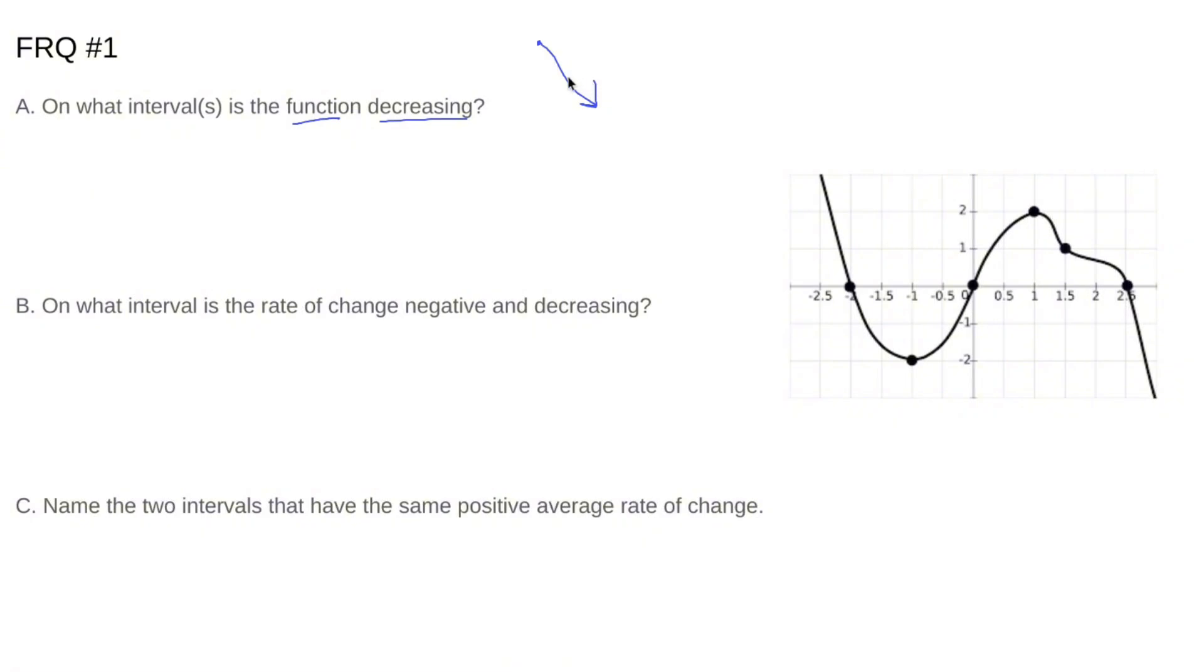the function is decreasing when you move along the x-axis and you're going down and to the right. It can be a straight line, it can be a wobbly line. All you care about is, is our graph going down and to the right?